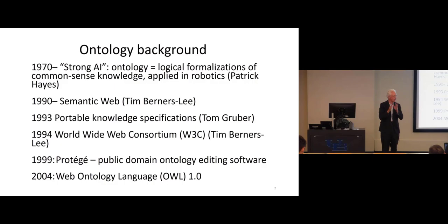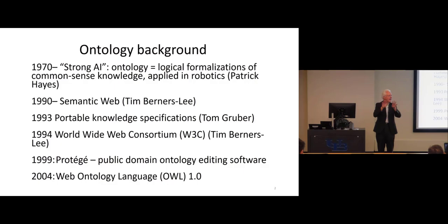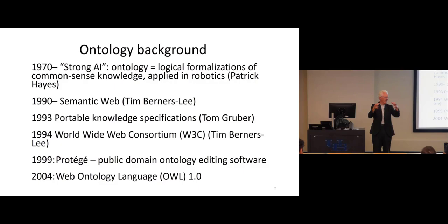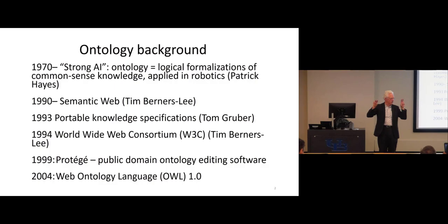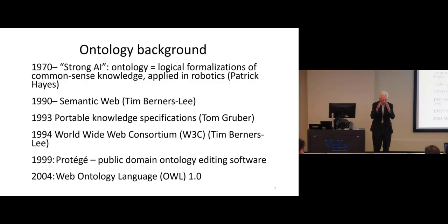This led to the idea of the semantic web, created by Tim Berners-Lee as the next generation of the internet. The problem with the internet was that HTML is so flexible that if one person writes about refrigerators and another person writes about refrigerators, you can't necessarily combine what they say because they each write in their own dialect. The idea was to use ontologies for a more constrained way of capturing knowledge for scientific purposes.